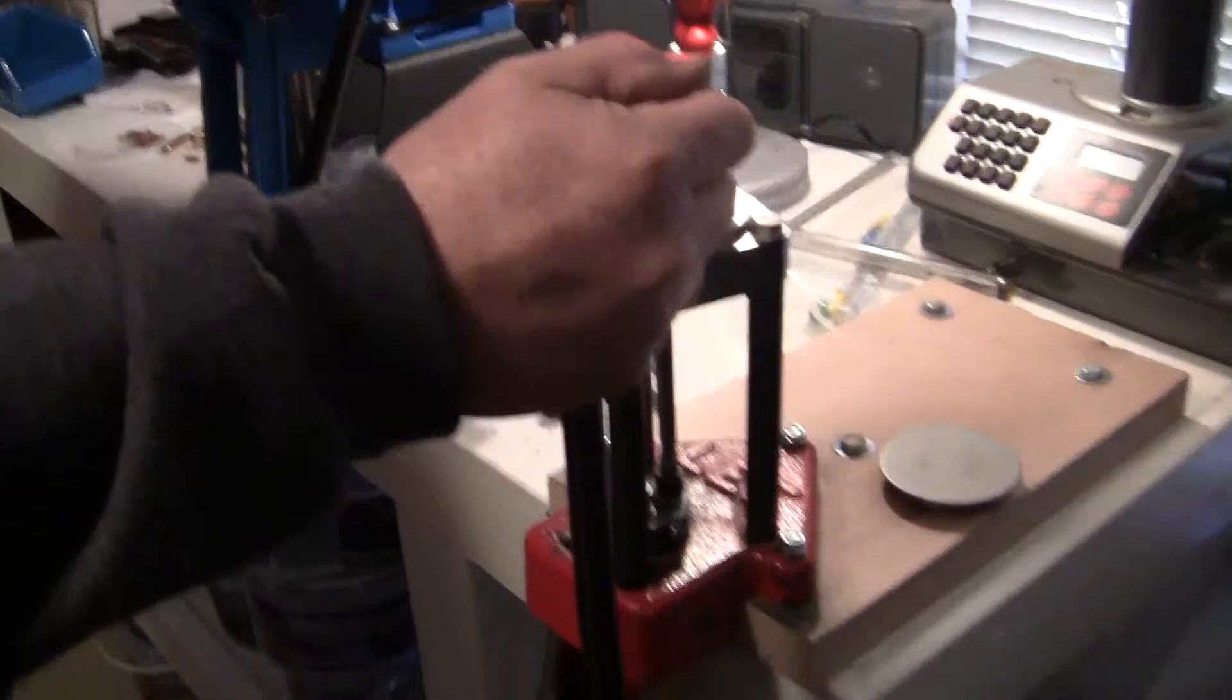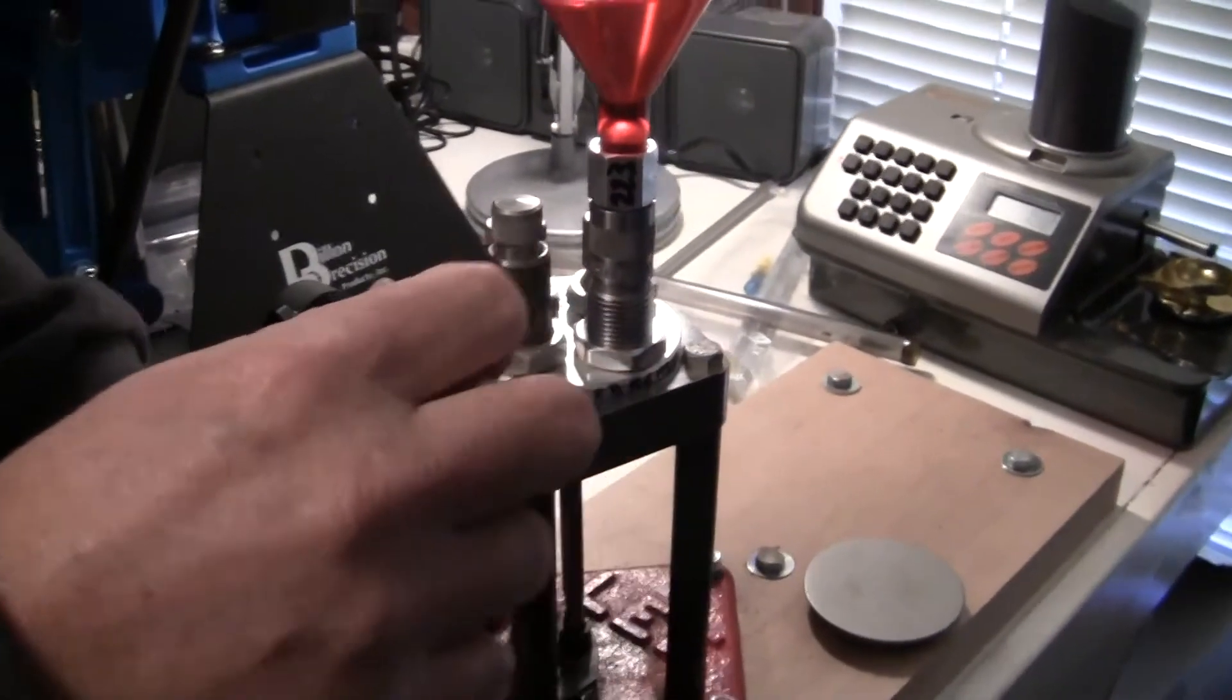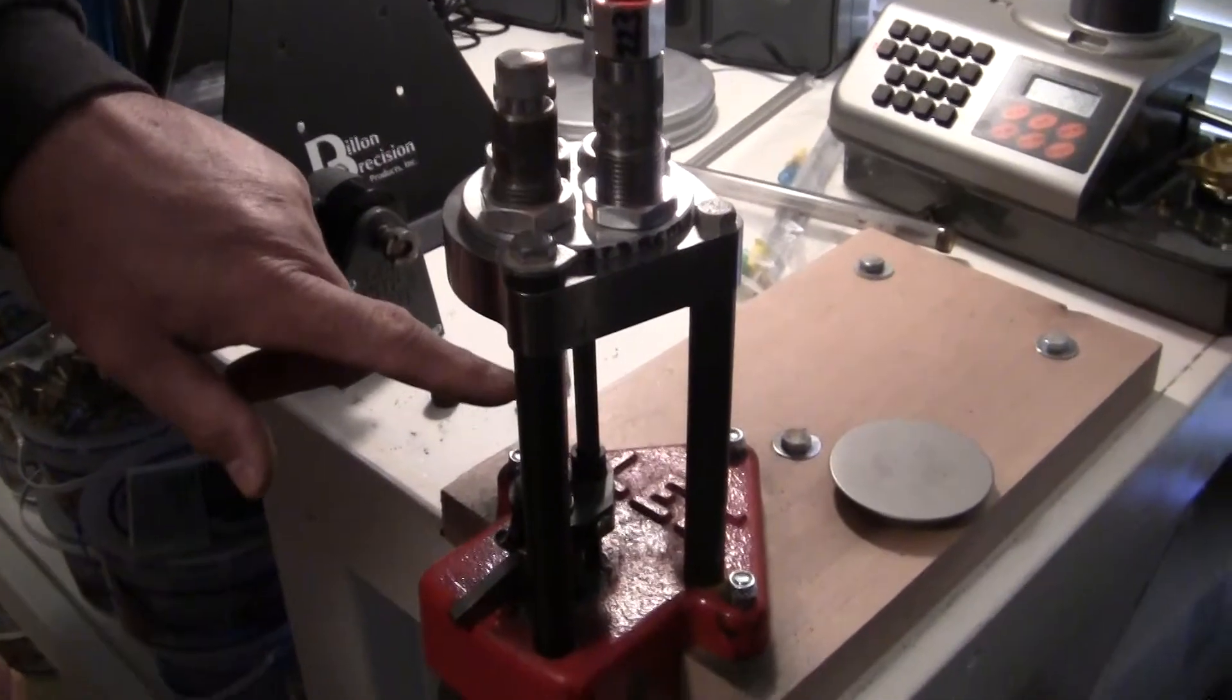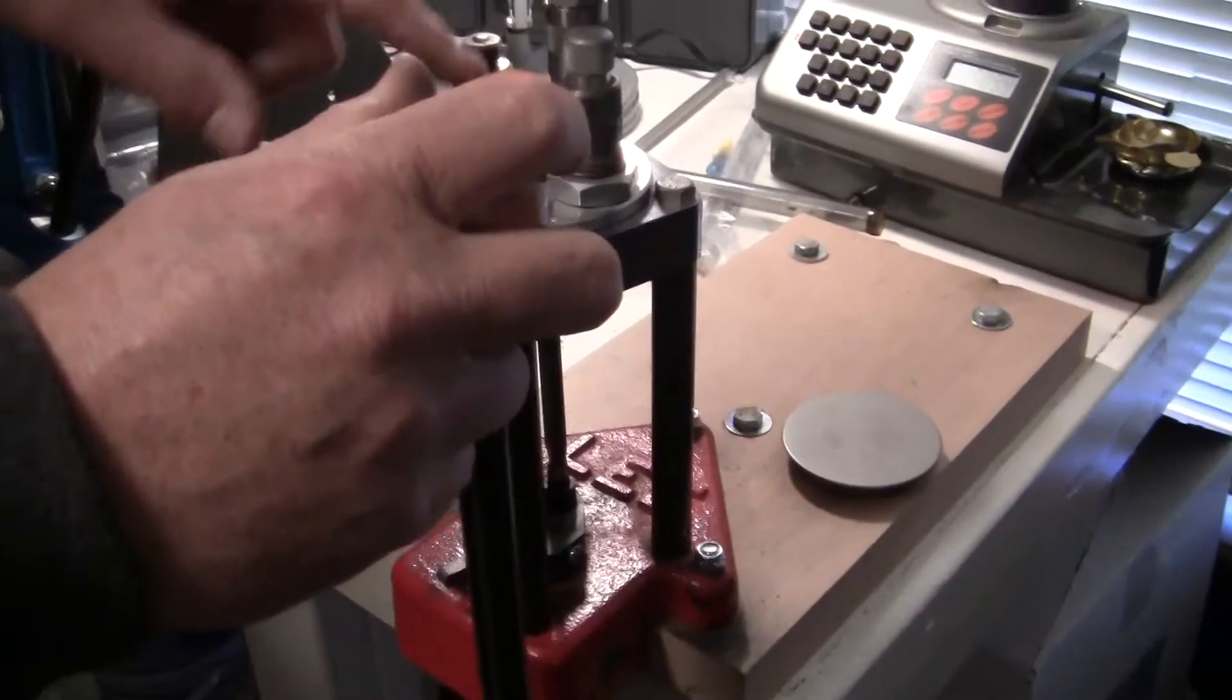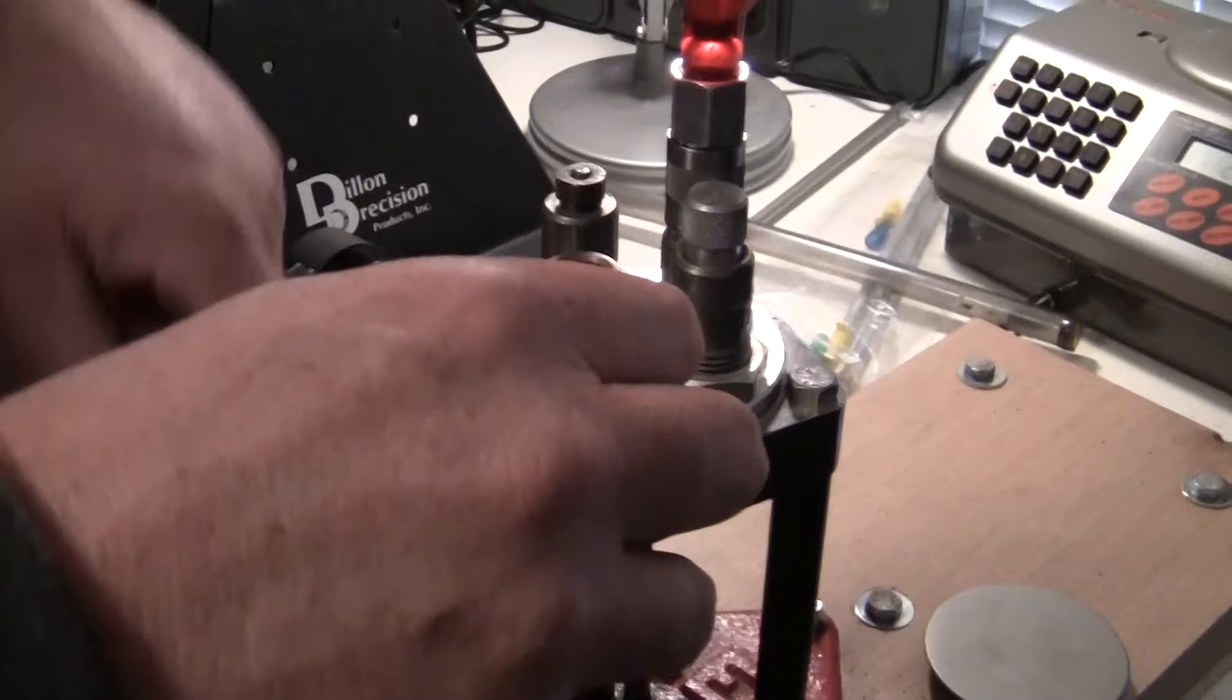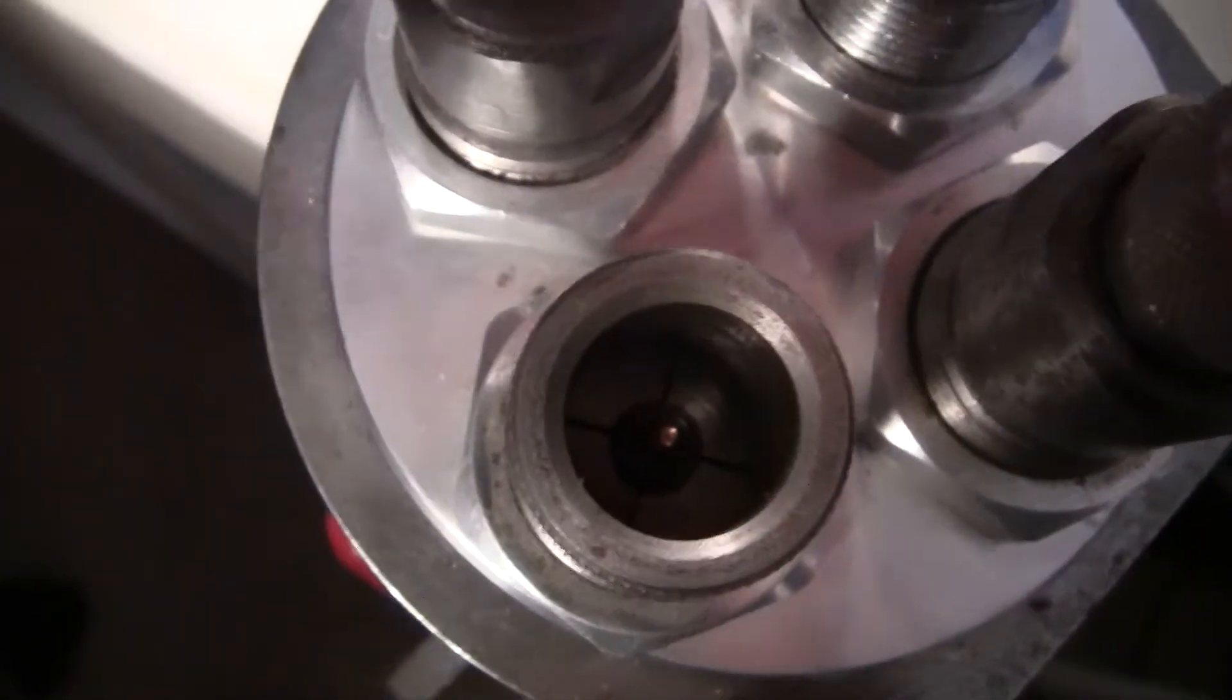Look on the ram, it brings it around to the bullet seating die and it set the bullet to the proper depth. It's going to rotate to the factory crimp die. It's got four collets down in there that squeezes the neck.